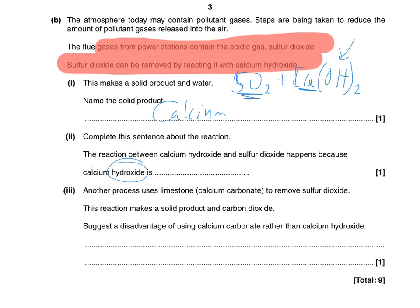Another process uses limestone to remove sulphur dioxide — this reaction makes a solid product again and carbon dioxide. Suggest a disadvantage of using calcium carbonate rather than calcium hydroxide. They've very kindly given it to us in the question. Now, if you just say it produces carbon dioxide, that's probably not enough to get you a mark — you've got to link it, you've got to explain why it's a disadvantage. If you think the mark is too easy, sometimes you've got to expand on things.